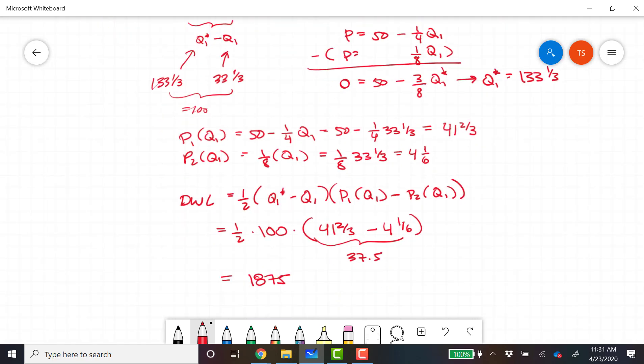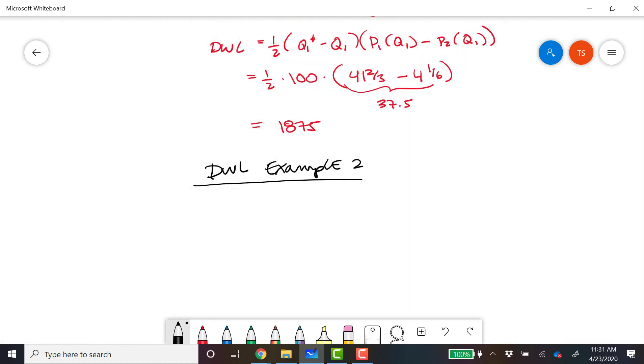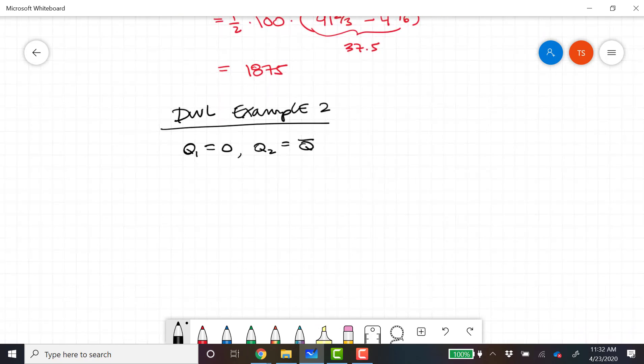And then there's one simpler version that we probably want to do, which is what happens if it's all or nothing? It's a little bit easier. So we'll call this deadweight loss example 2. And in deadweight loss example 2, we'll just do an all or nothing allocation. So Q1 equals 0, Q2 equals Q bar. We'll draw our graph here.